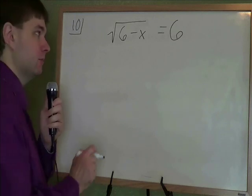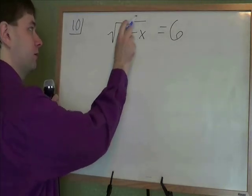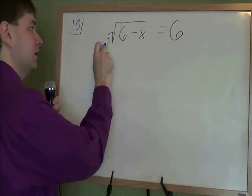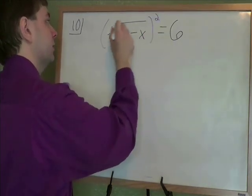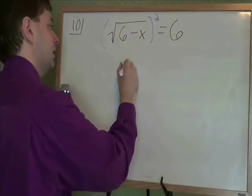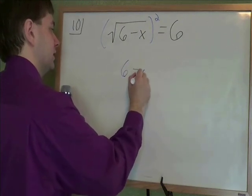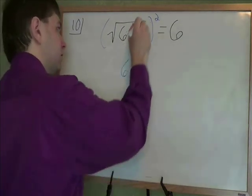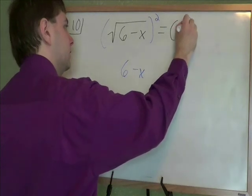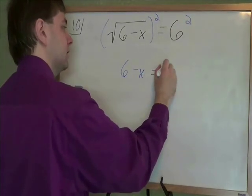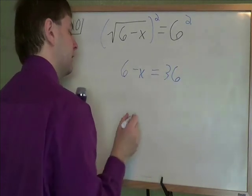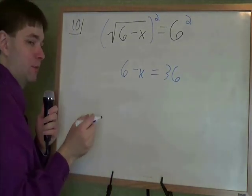For this problem, we need to remember what gets rid of a square root. And it turns out the opposite of a square root is a square, a power of 2. Square and square root cancel out, just leaving x minus 6 on the left side. And of course, whatever you do on the left side, you need to also do on the right side. 6 squared, 6 times 6, is 36. And from here, it should start looking a lot more manageable.